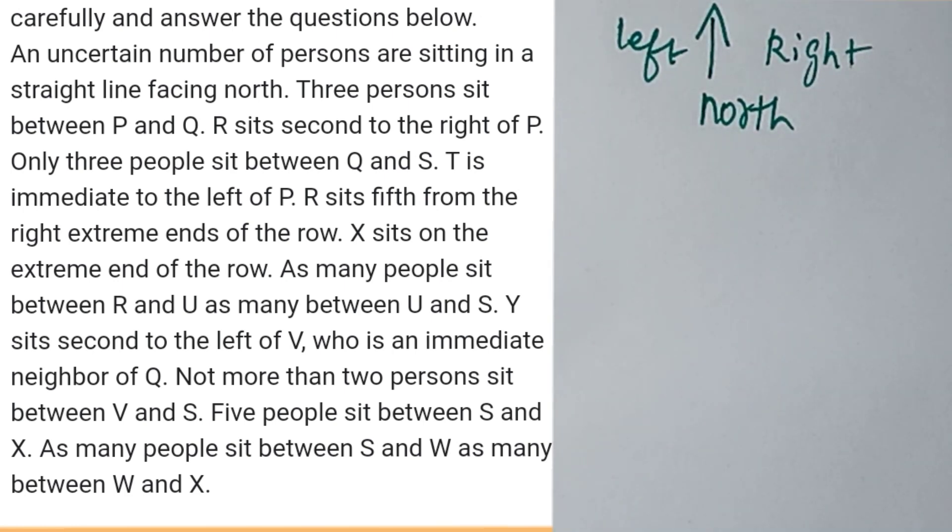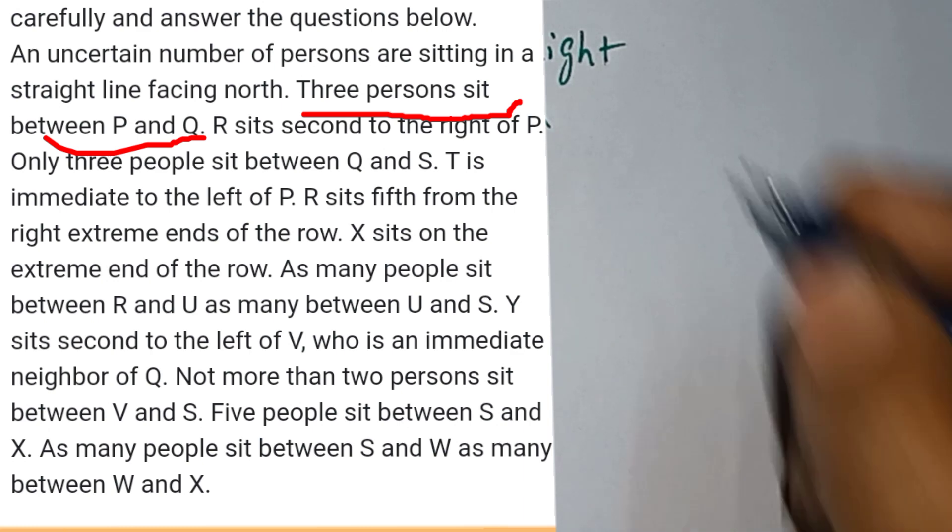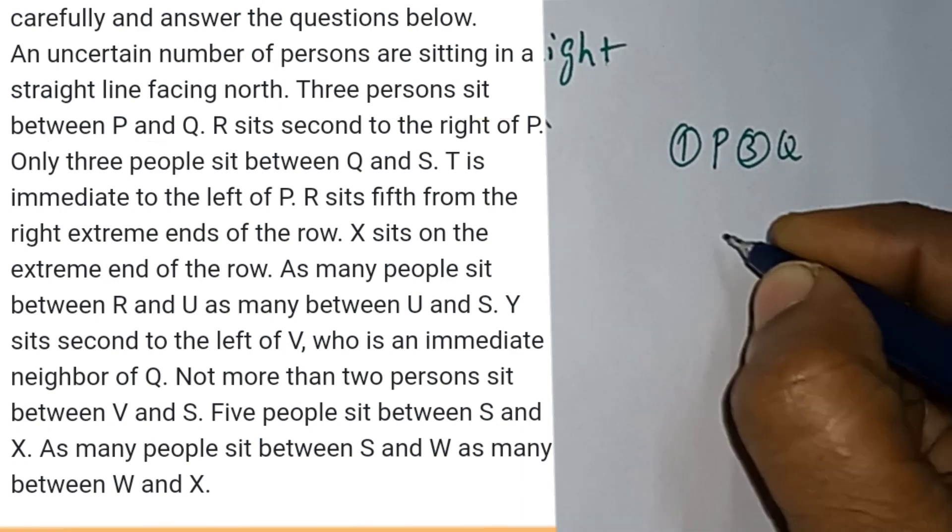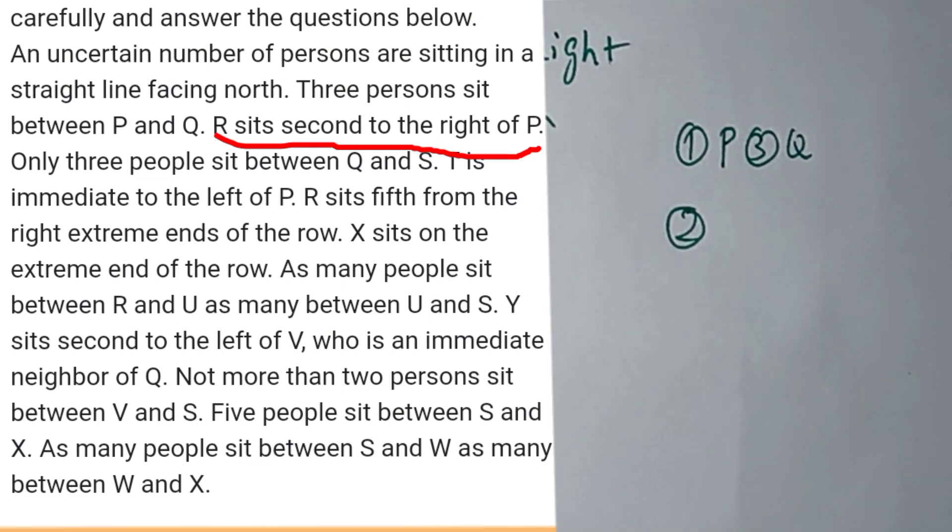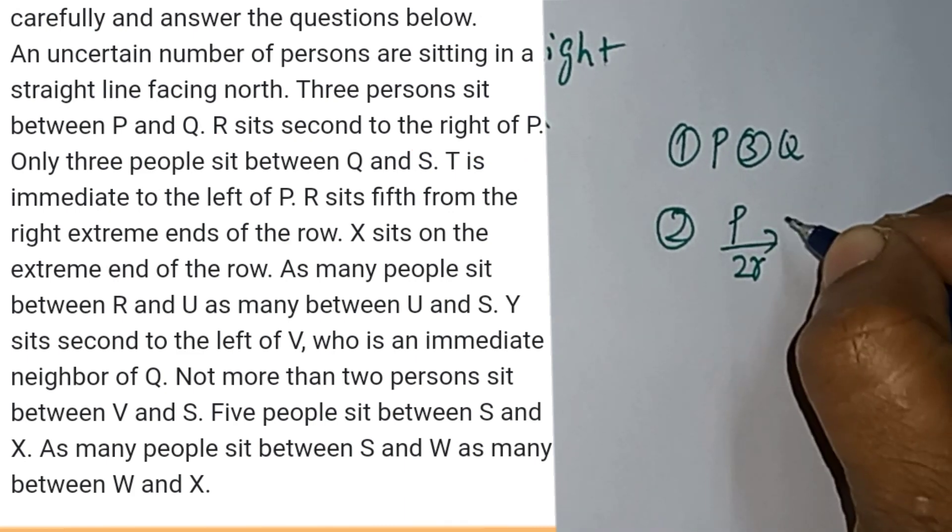The first point is three persons sit between P and Q. The second point is R sits second to the right of P. So if you put R to second right, which means R is second to the right of P.